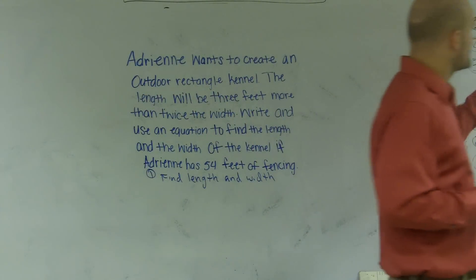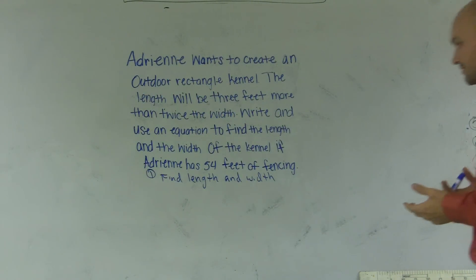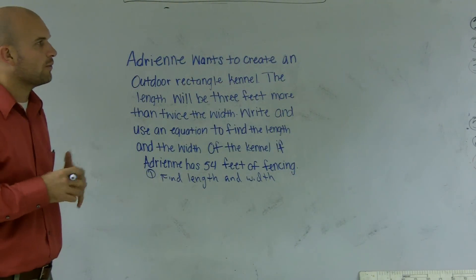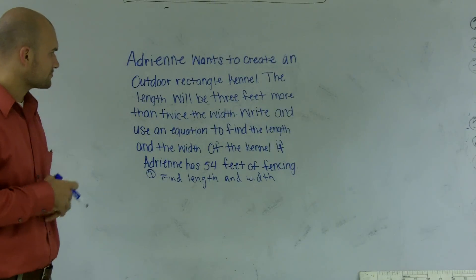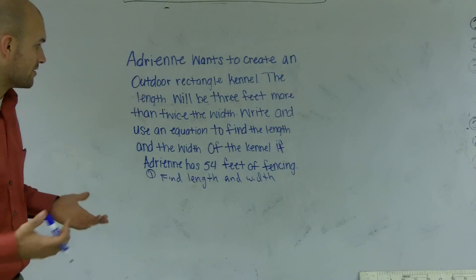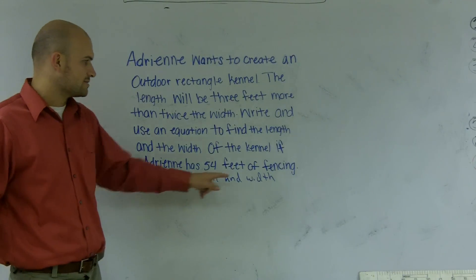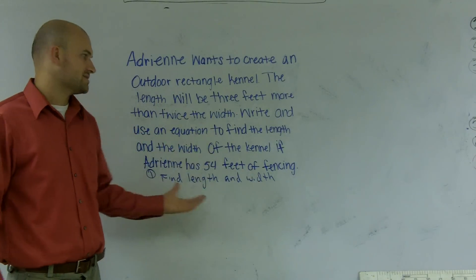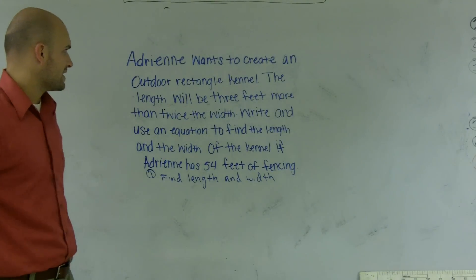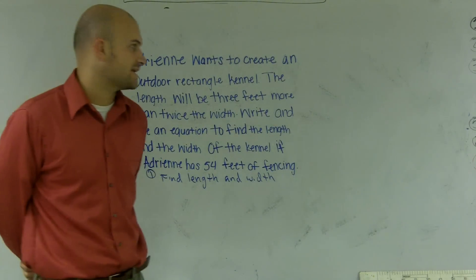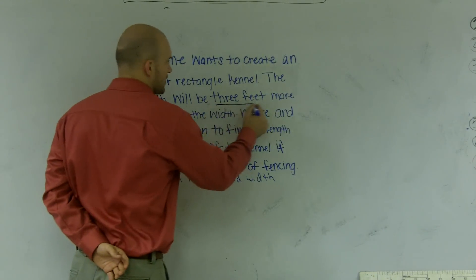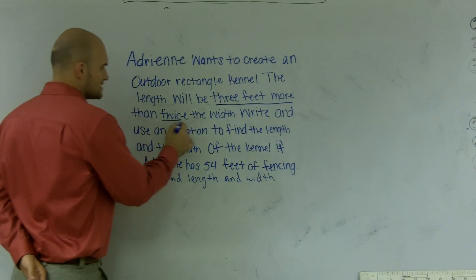Now the next thing is we need to see what is our variable. Let's just use x for our example. We need to remember what our variable is going to represent. Usually our variable represents our unknown — what is it we don't know? We have a problem here because we don't know the length or the width. x is going to have to represent one of them. Let's go back into the problem and see if they give us any advice. It says the length will be three feet more than twice the width.